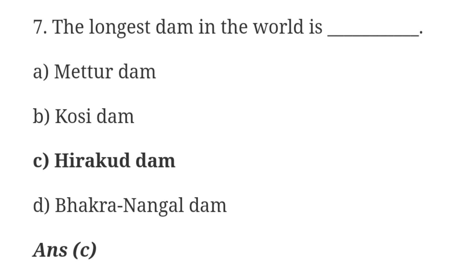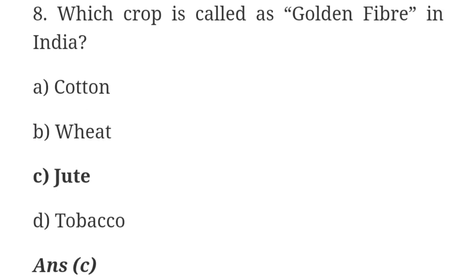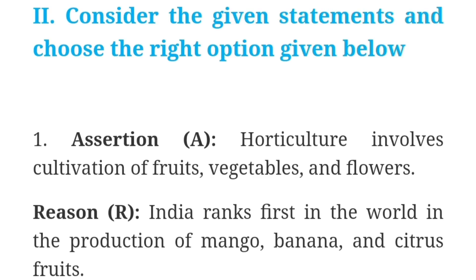Question 7: The longest dam in the world is — Answer: Option C, Hirakud Dam. Question 8: Which crop is called as golden fiber in India? — Answer: Option C, Jute.